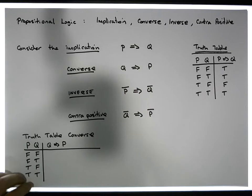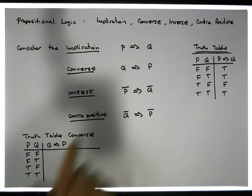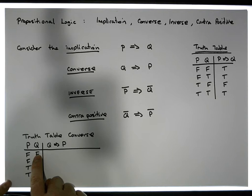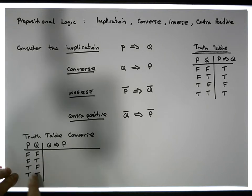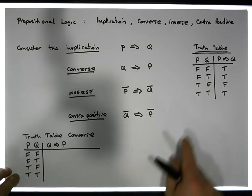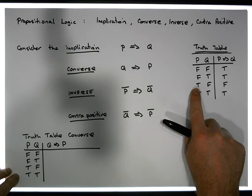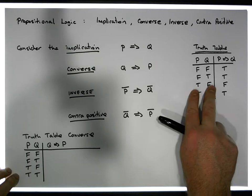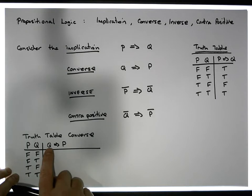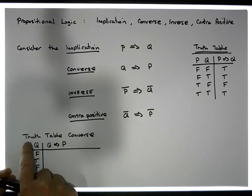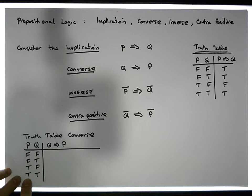So it's flipped around. Let's see what we have here. So we have when Q is false, we have P false — that's a false-false. Now we know that an implication is only ever false when the premise is true and the conclusion is false. The premise in this case is down the Q column and the conclusion is down the P column.